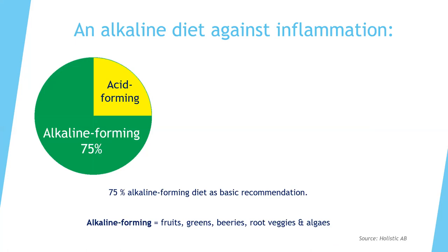When we talk about inflammation, you always have a more acidic environment in your body, which also comes from certain kinds of foods. Bacteria like acidic environments, so if you eat more alkaline-forming foods — fruits, vegetables, greens, berries, root vegetables, algae — you create a better environment for good bacteria. That makes things less inflammatory.